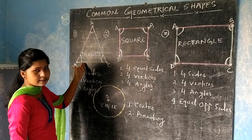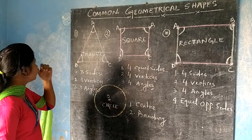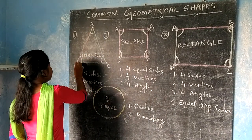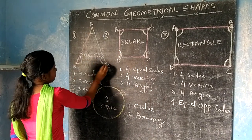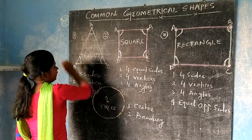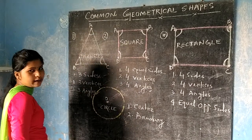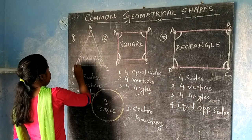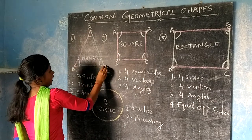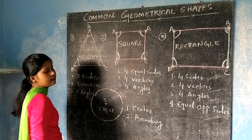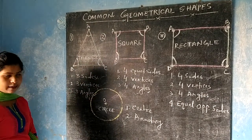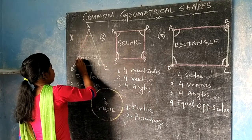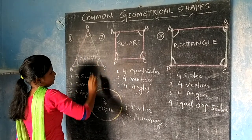It is a geometrical shape. It has three sides: A, B; B, C; and C, A. And it has three vertices: A, B and C. And it has three angles: A, B and C.